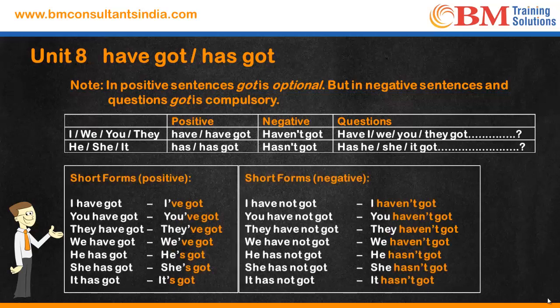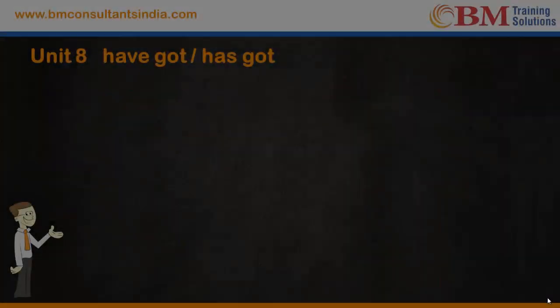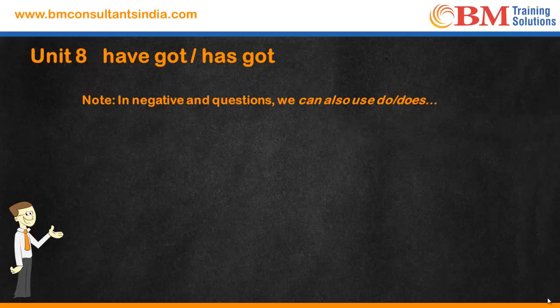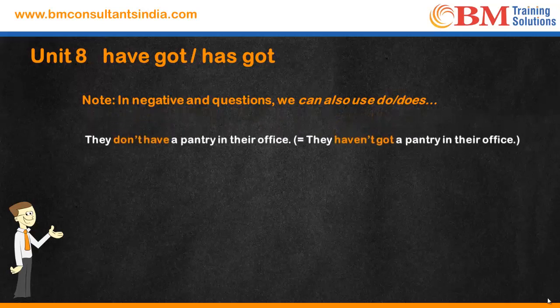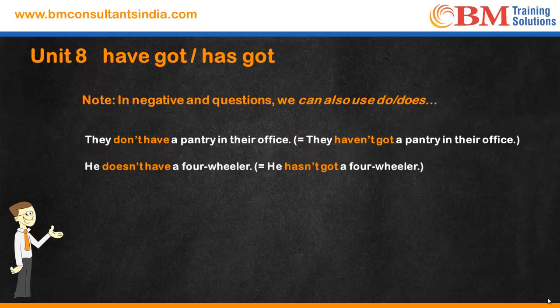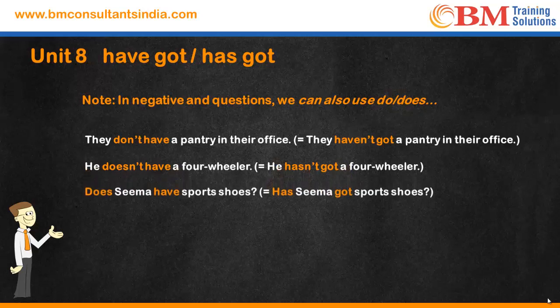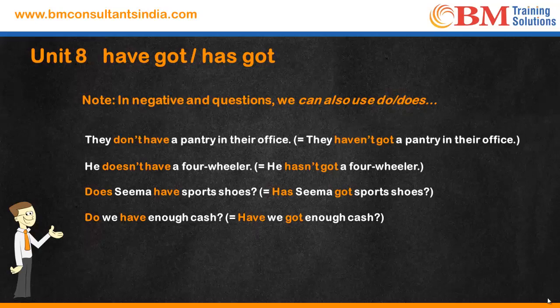In negatives and questions, we can also use 'do' or 'does.' For example: 'They don't have a pantry in their office' is the same as 'They haven't got a pantry in their office.' 'He doesn't have a four-wheeler' is the same as 'He hasn't got a four-wheeler.' 'Does Seema have sports shoes?' is the same as 'Has Seema got sports shoes?' And 'Do we have enough cash?' is the same as 'Have we got enough cash?' Thank you.